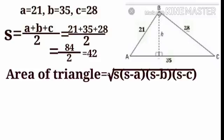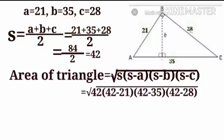The area of the triangle is the root of S into S minus A into S minus B into S minus C. Now, S is equal to 42.